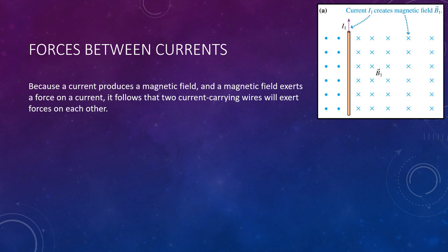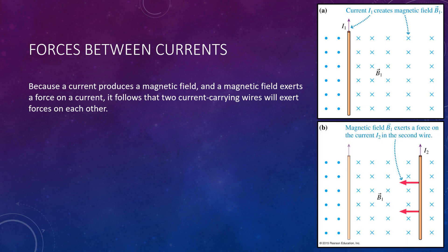So this wire with current has established a magnetic field in the region around it. If we now take a second wire and place it in that magnetic field, it's going to experience the effects of that magnetic field, and thus experience a force. Looking at that wire on the right-hand side, with your thumb pointing upward in the direction of current and your index finger pointing into the page with the magnetic field, your middle finger for force points to the left. So wire 2 on the right will experience a force to the left.